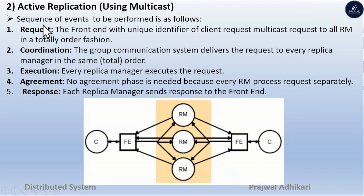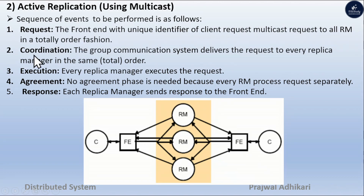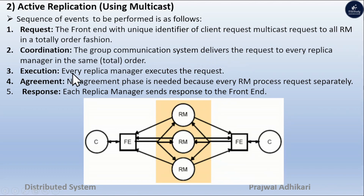The sequence of events in the active replication model are as follows. Request: the front end, with a unique identifier, multicasts the client request to all replica managers in a totally ordered fashion. Coordination: the group communication system delivers the request to every replica manager in the same order. Each replica manager executes the request.